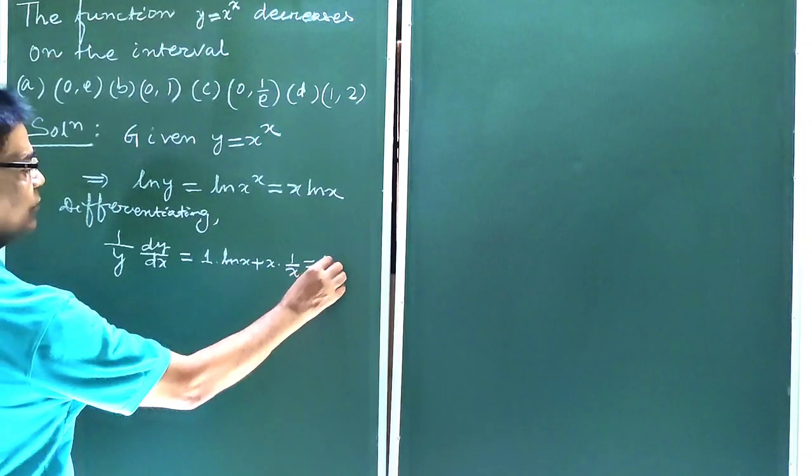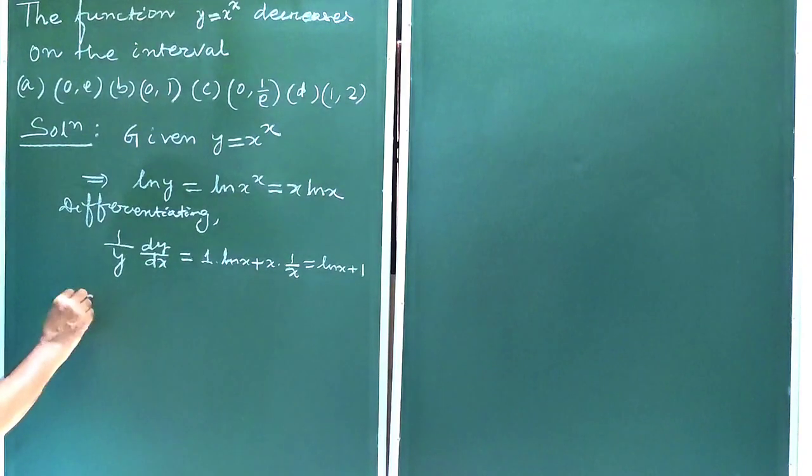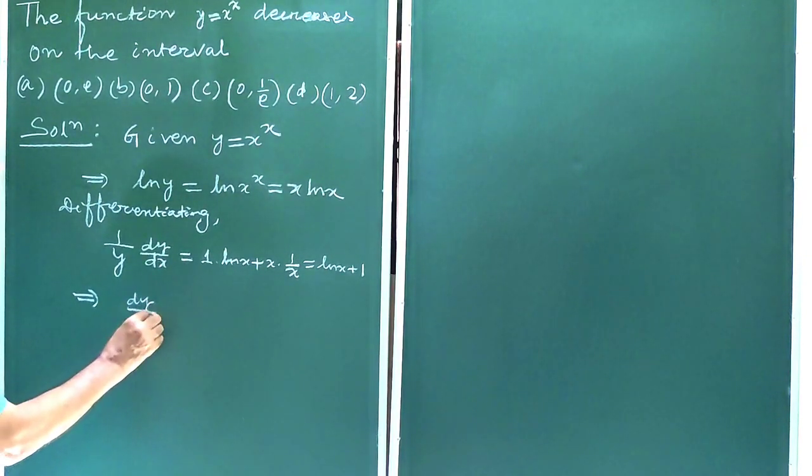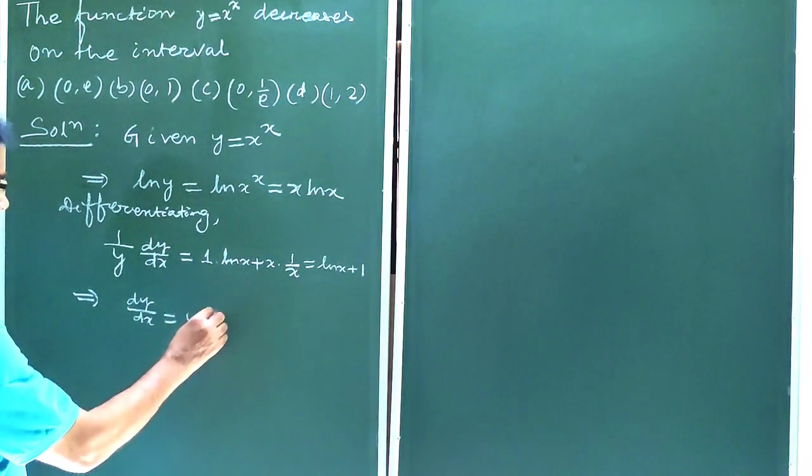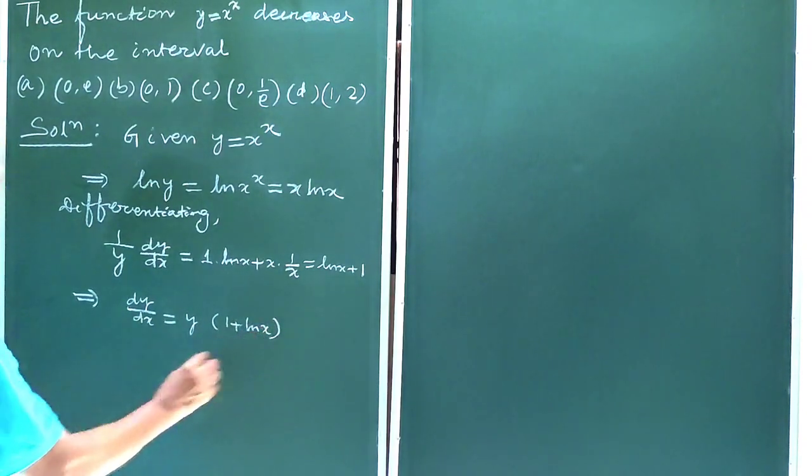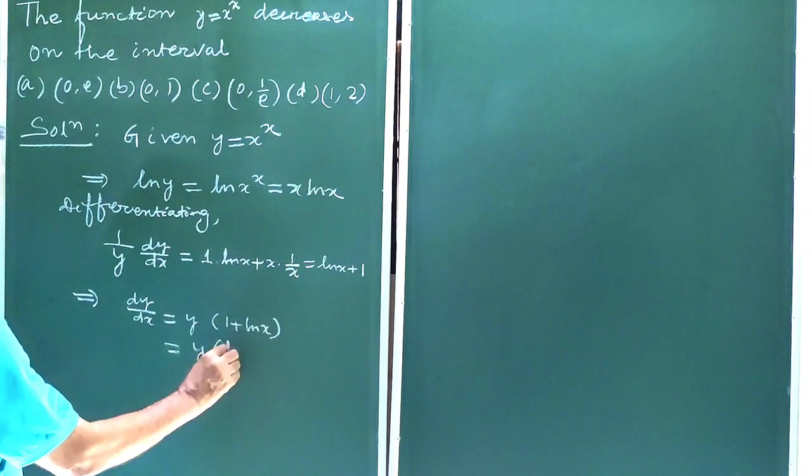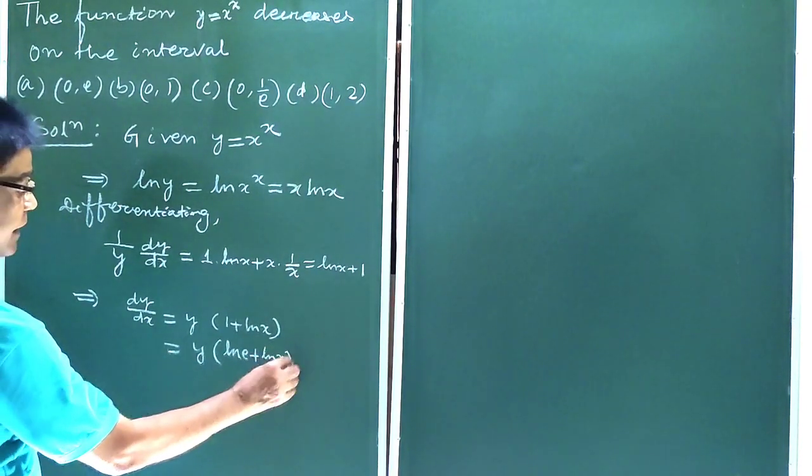This is equal to ln x plus 1. This implies dy/dx equals y times (1 plus ln x). This is equal to y times (ln e plus ln x).